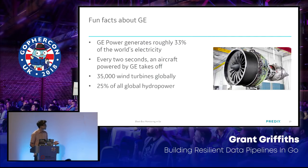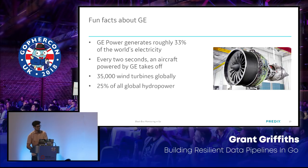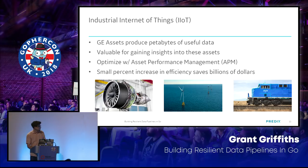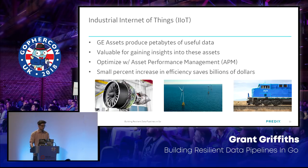Some fun facts: GE powers roughly 33% of the world's electricity. Every two seconds, an aircraft powered by GE takes off — so that's two terabytes of data every two seconds. And there are 35,000 wind turbines globally. We call this the industrial internet of things, and it's really valuable to get insights into all of this data.